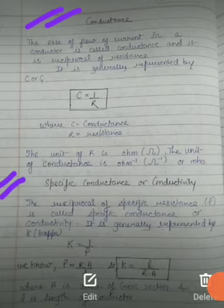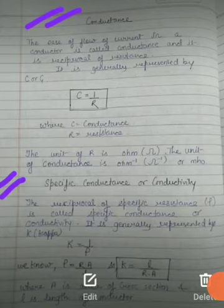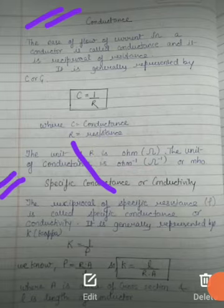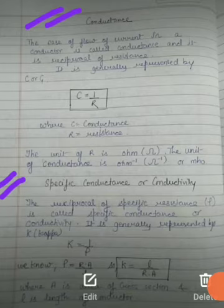Now let's talk about specific conductance, or conductivity. The reciprocal of specific resistance (rho) is called specific conductance or conductivity. It is generally represented by kappa. So from this we can derive that kappa is equal to one by rho, as it is the reciprocal of specific resistance.